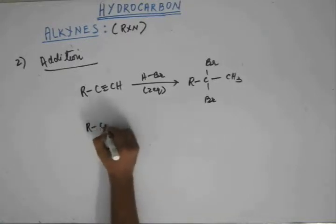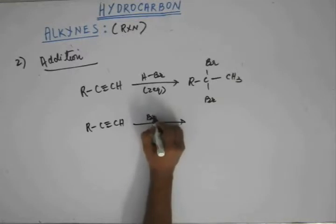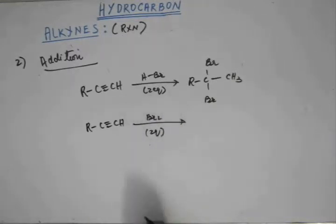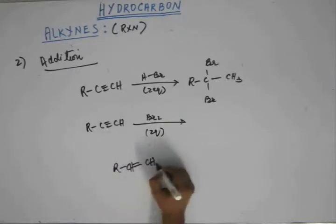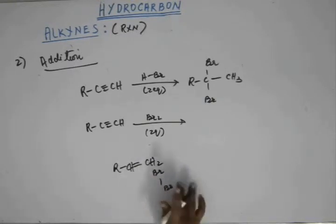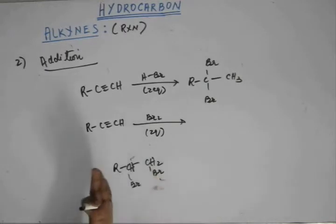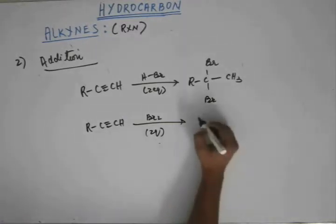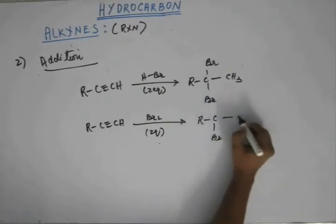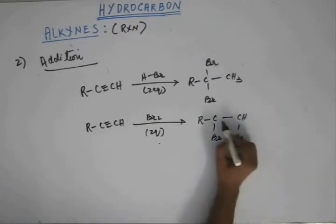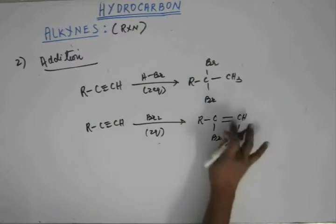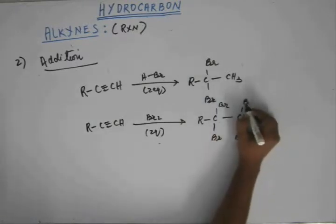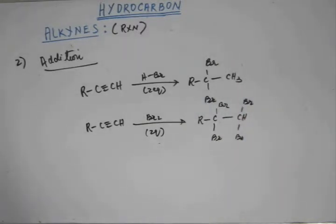If instead of HBr you add Br2, two equivalents are consumed because of the two pi bonds. For the first pi bond addition on alkene recall: one bromine attaches to one carbon, a plus charge develops, and the next bromine attaches to the adjacent carbon. Since alkyne has two pi bonds, for the first pi bond one bromine goes on each carbon and one pi bond remains. On the second addition, one more bromine goes on each of those adjacent carbons, giving a tetrabromoalkane — or in general, a tetrahaloalkane.